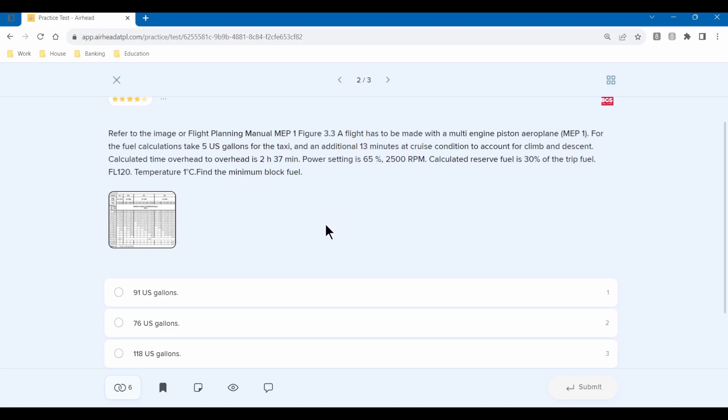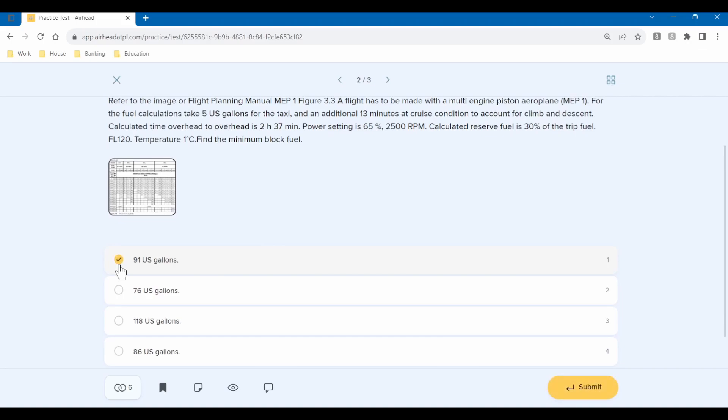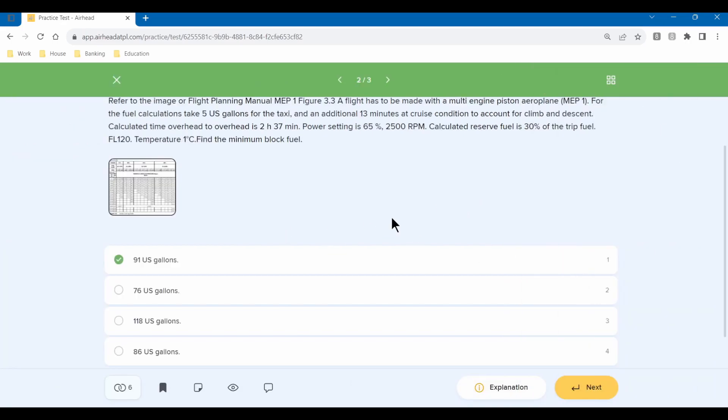So 23.3 gallons per hour times 2 hours 50 minutes total for cruise, climbing, and descending gives us 66 gallons of fuel. Contingency is 5% of this—that's 3.3. Then our reserve fuel is 30%, making that 19.8. Add that all together and we get 94.1 US gallons. The closest answer here is 91. The 30% reserve fuel must include the contingency fuel, but by adding it in we wouldn't have actually done any harm—we've taken more fuel and the answers are far enough apart.